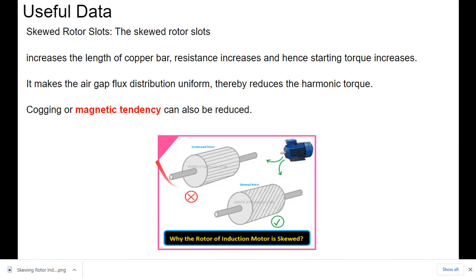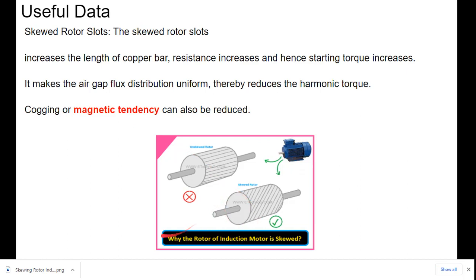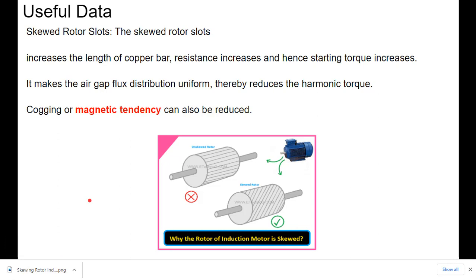Also, it makes the air gap flux distribution uniform thereby reduces the harmonic torque. Also, magnetic locking or magnetic tendency can also be reduced. So in induction motors, skewing the rotor bars through some angle prevents magnetic locking or magnetic tendency, makes the air gap flux uniform, and increases the starting torque.